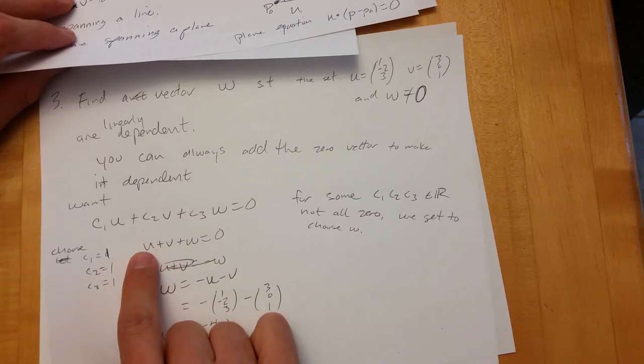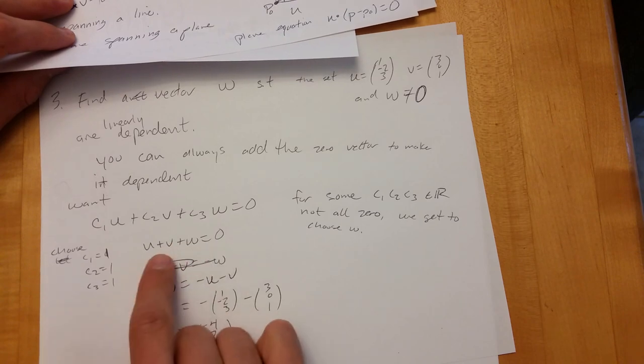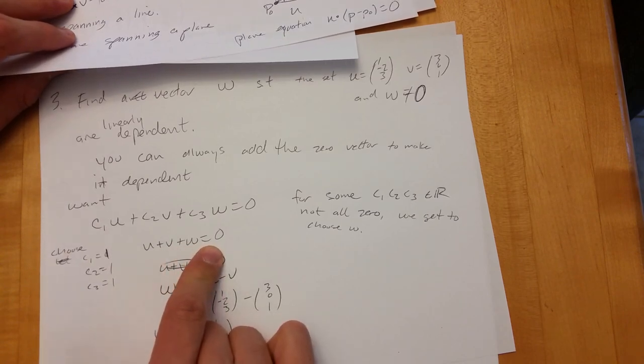Plus two W equals zero is the same equation as V plus U plus V plus W equals zero. If I multiply this by any non-zero scalar, I'll get the same equation.